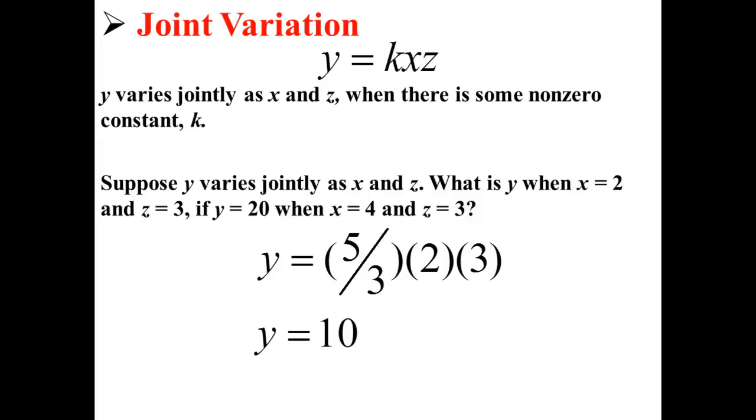So when x is 2 and z is 3, y is equal to 10 according to our equation with joint variation.